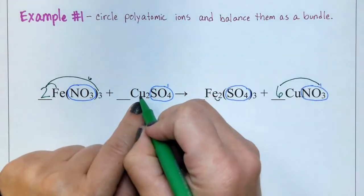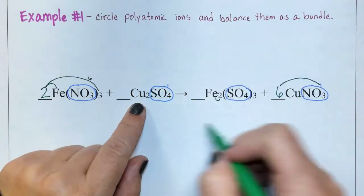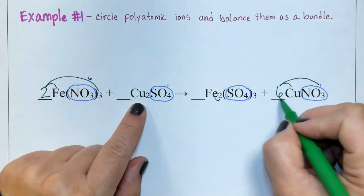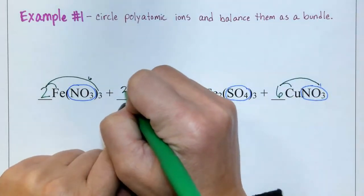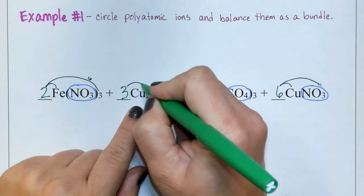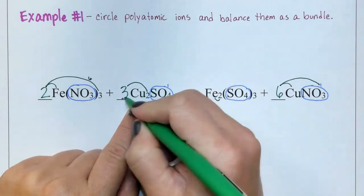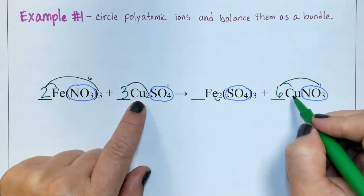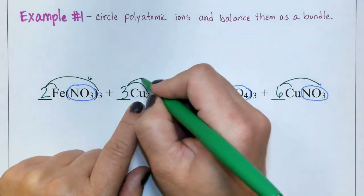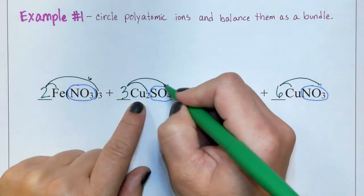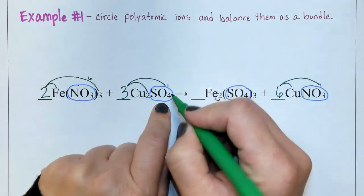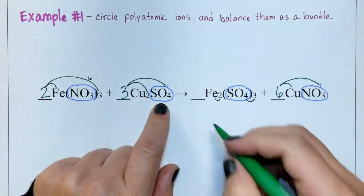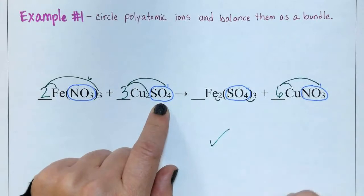Now copper — there are two coppers on the left but six coppers on the right, so we want to fix that. If I put a coefficient of three here, I would get three times two is six coppers on the left, six coppers on the right. Finally, we have three times one is three sulfates on the left, and three sulfates on the right. So now this is balanced.